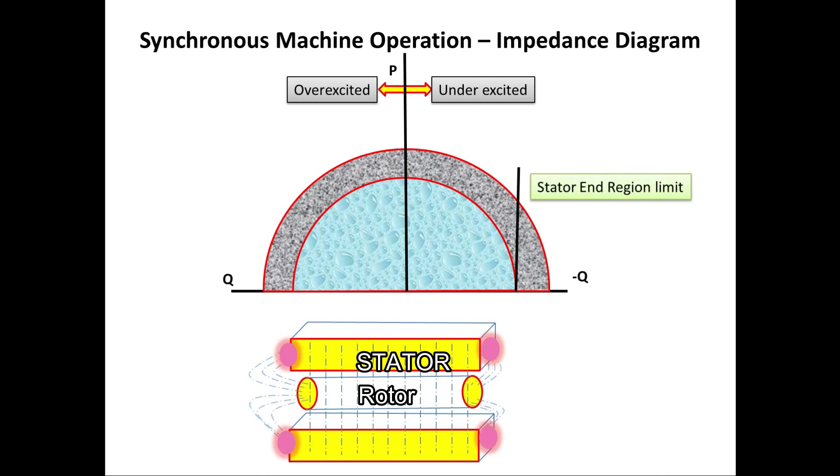Due to this the core makes more flux. This excess flux flows on the end of the stator core, which makes eddy current, which leads to overheat. So this area is known as stator end iron limit.